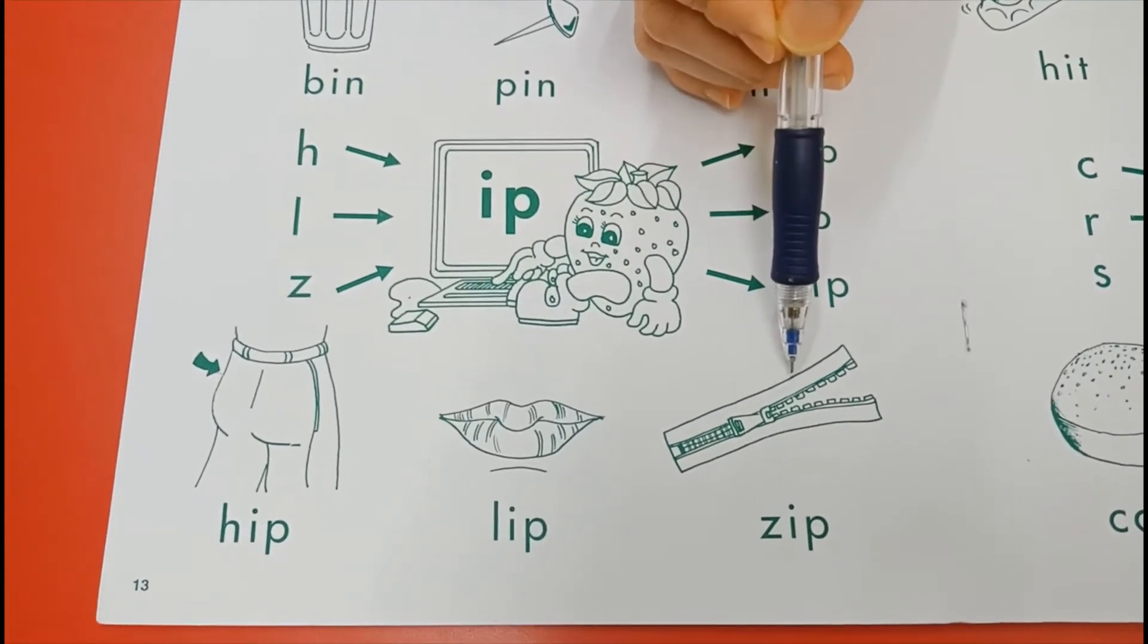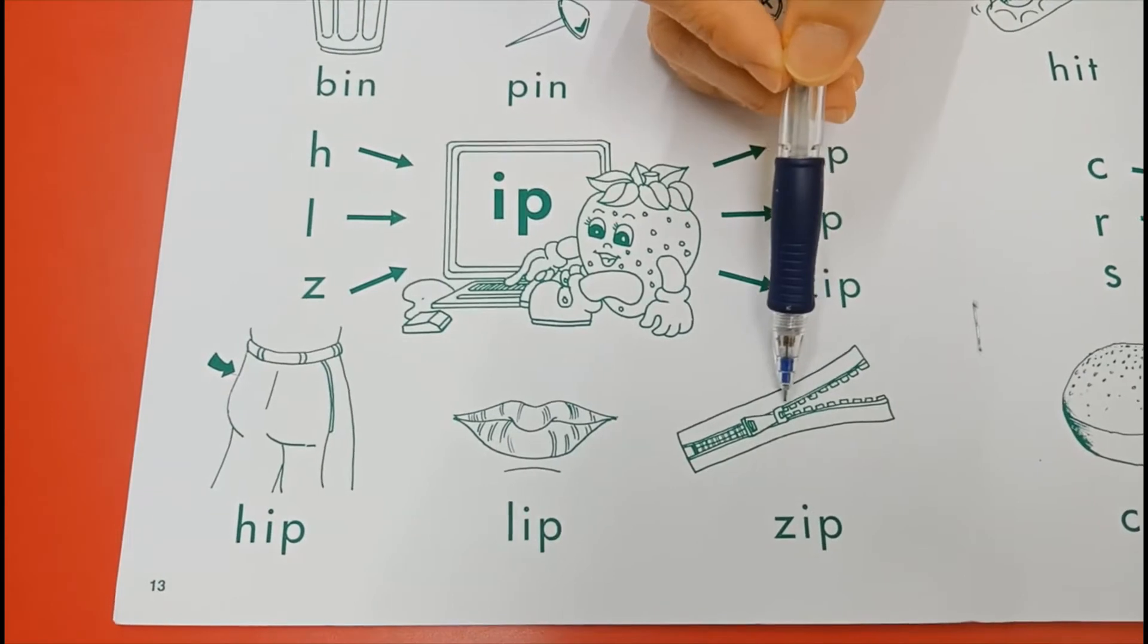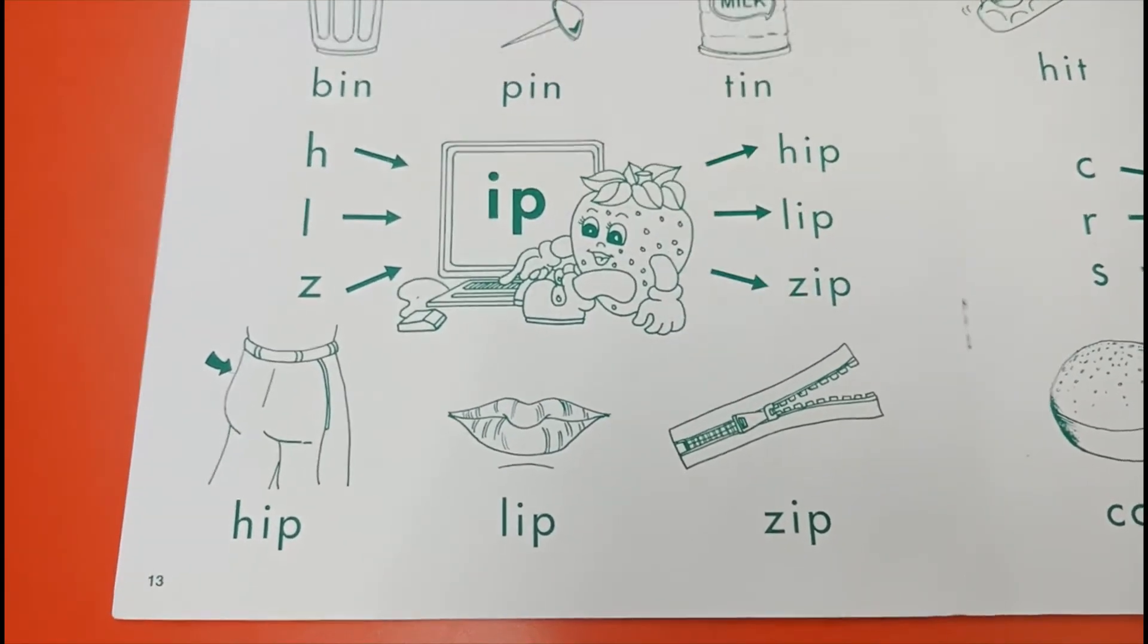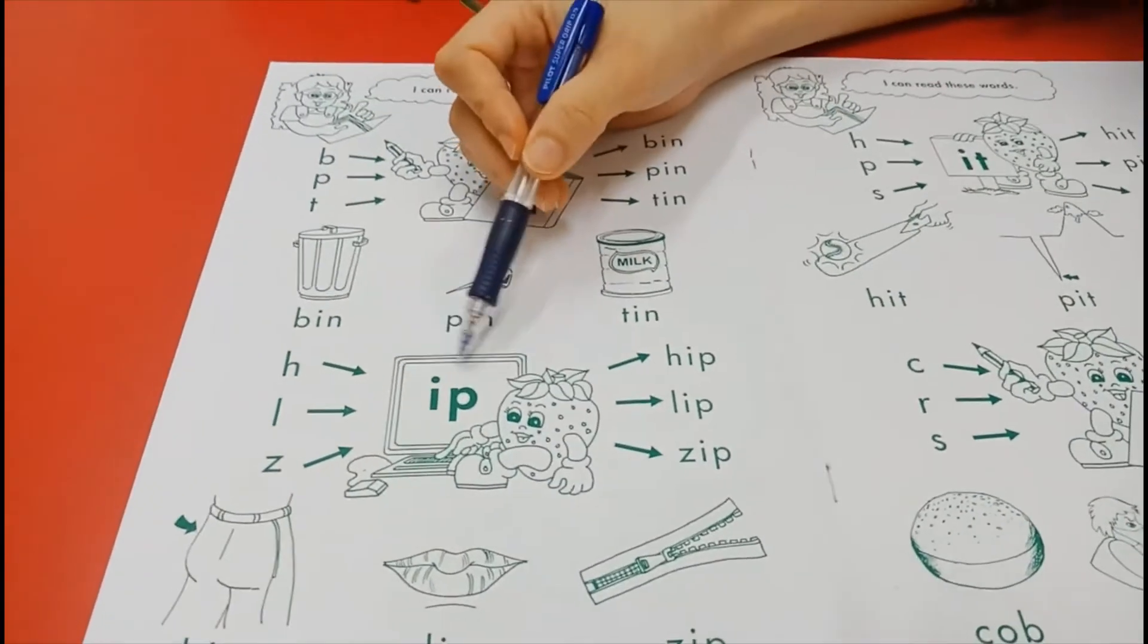And zip. Zip is where you find on your clothes. Sometimes you must zip up your pants or your clothes. So you have the zip. So today we learned about IN and IP.